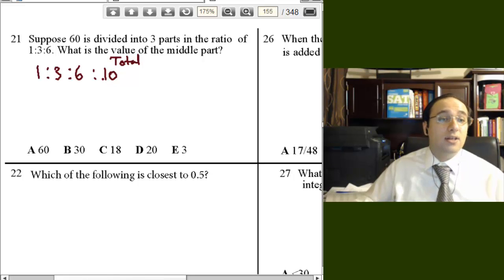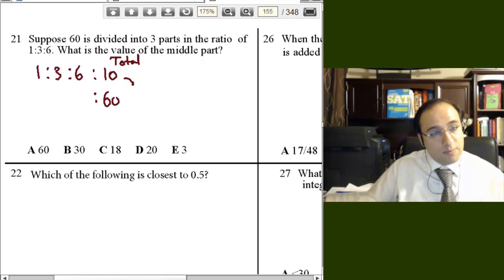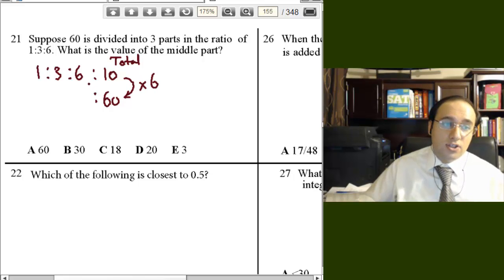Now, we know that the total is 60. So, 60 here under 10. That means that to go from here to here, we need to multiply by 6. So, to go from here to here, we multiply by 6.